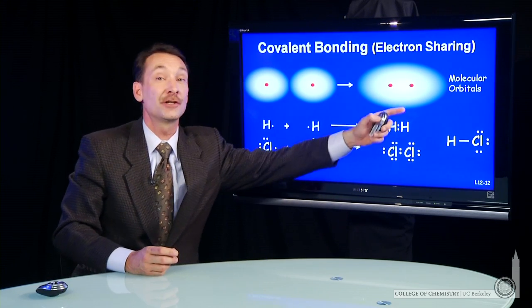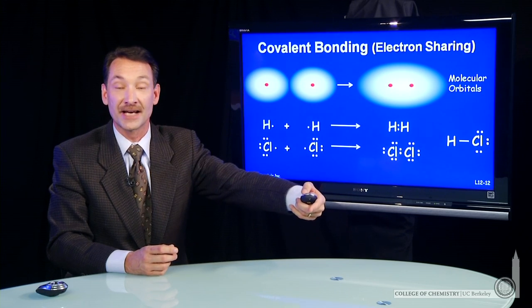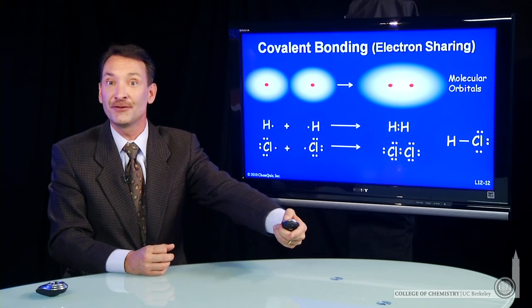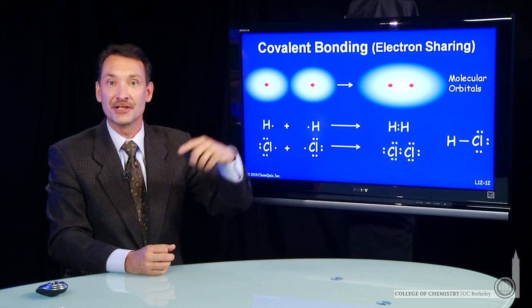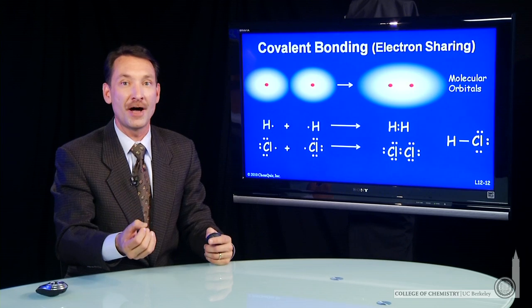And of course, hydrogen chloride could form. Hydrogen can share its valence electron with chlorine. Chlorine gets its full octet by sharing. Hydrogen gets its full outer shell of two by sharing. And they form a stable bond.